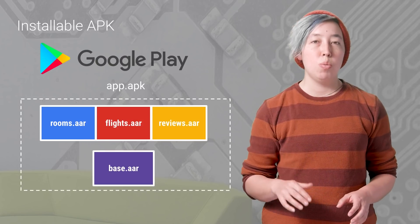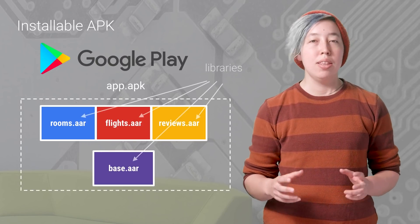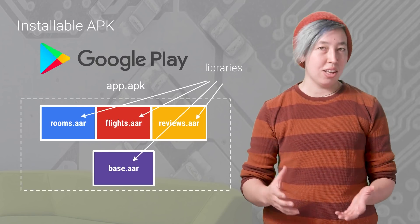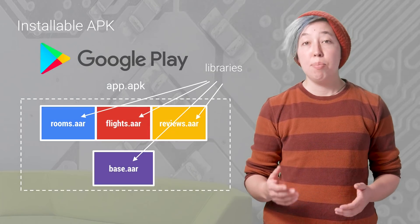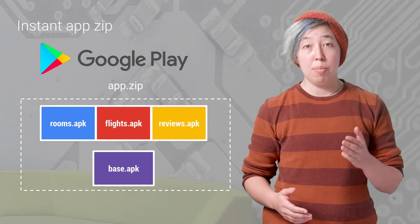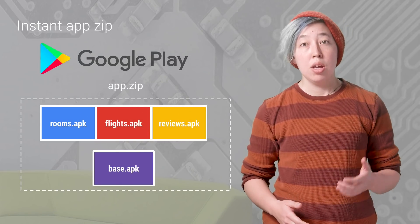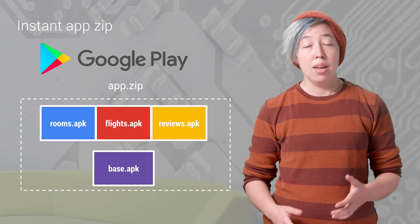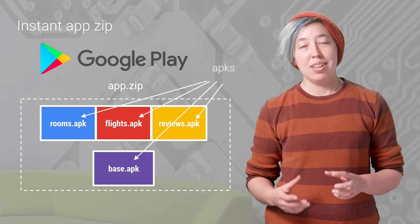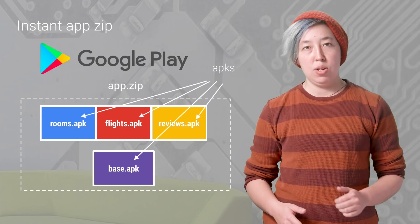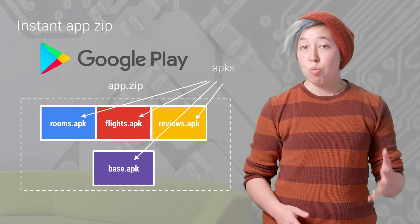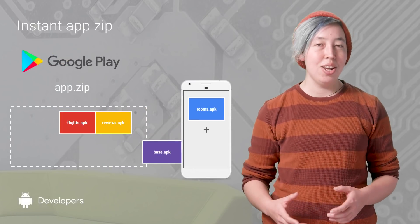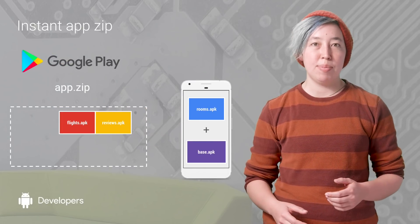Now, behind the scenes, when you compile as an installable app, these different feature modules will act like a collection of Android libraries. But when they're compiled as an instant app, you're going to get a zip file, which you then upload to Google Play. This zip file contains separate APKs for each feature module. At runtime, these APKs are loaded and composited together to provide the instant apps experience.